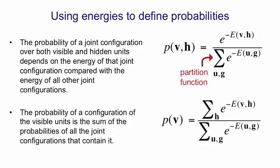To get the probability of a configuration of the visible units alone, we have to sum over all possible configurations of the hidden units. So P of V is the sum over all possible Hs of E to the minus the energy you get with that H, normalized by the partition function.